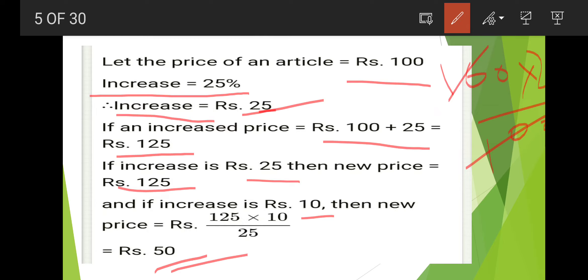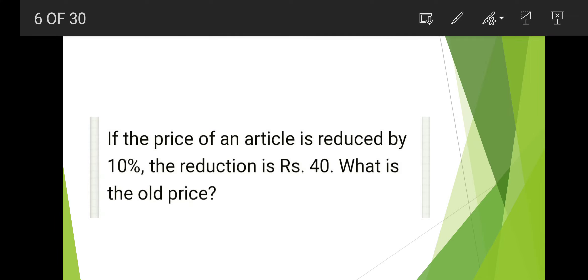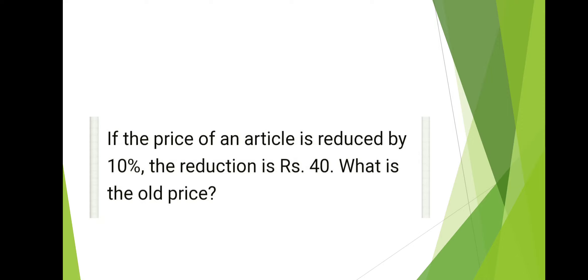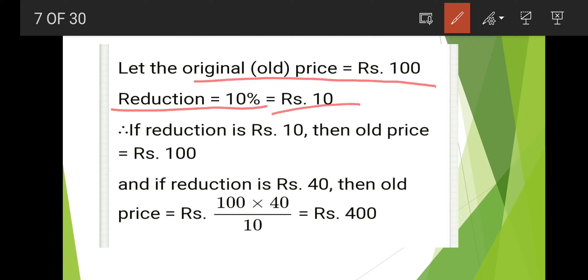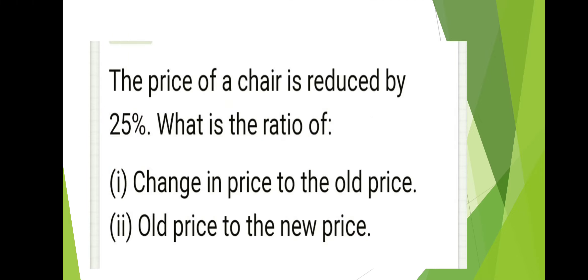The answer is rupees 50. Next question: if the price of an article is reduced by 10% and the reduction is rupees 40, what is the old price? Let the original price be 100. Reduction is 10% means rupees 10. If reduction is 10 then old price is 100; if reduction is 40 then the old price will be 100 into 40 by 10, which equals 400.